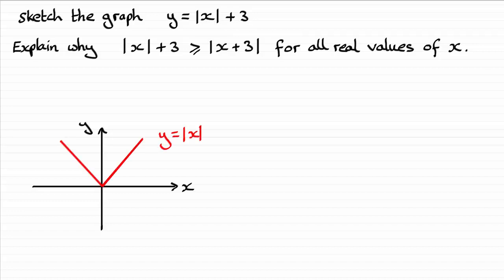Here it is. It's based on the graph of y equals x alone, which would be a diagonal line. Whenever you've got any negative values of y, they're going to become positive values, so you get a reflection in the x-axis. So the graph of y equals the mod of x is symmetrical about the y-axis.